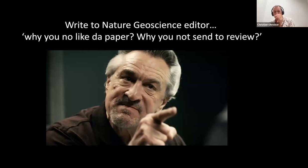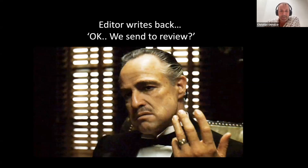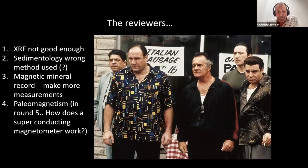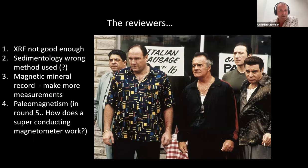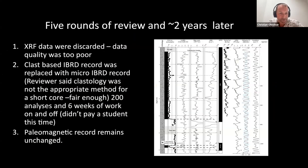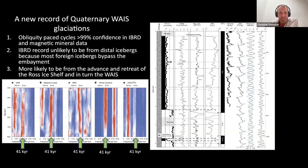We wrote to the editor asking why the paper wasn't sent to review, and the editor agreed to send it. The reviewers said the XRF wasn't good enough, the sedimentology was wrong, a bad method was used, and more measurements were needed for the magnetic mineral record. Interestingly, the paleomagnetism didn't have issues until round five, when someone questioned how a superconducting magnetometer works. After five rounds of review over about two years, the XRF was thrown out and we developed a new micro-iceberg-rafted debris record using a newly developed technique.